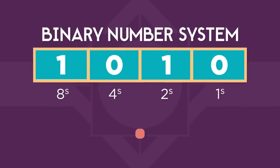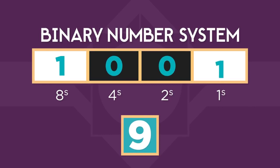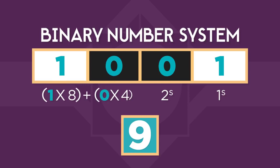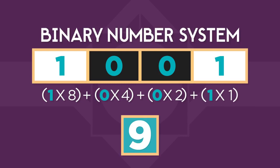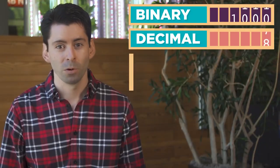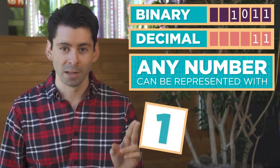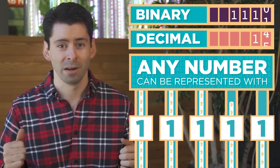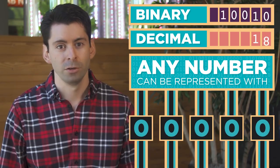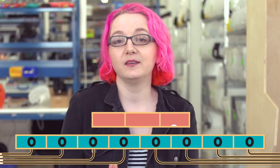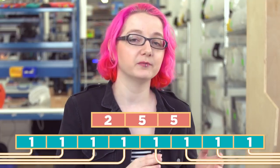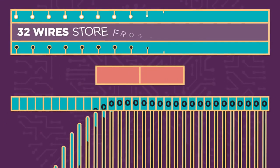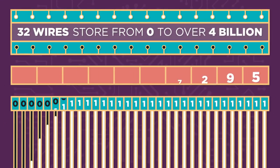For example, the number nine in binary is one, zero, zero, one. To calculate the value, we add one times eight, plus zero times four, plus zero times two, plus one times one. Almost nobody does this math because computers do it for us. What's important is that any number can be represented with only ones and zeros, or by a bunch of wires that are on or off. The more wires you use, the larger the numbers you can store. With eight wires, you can store numbers between zero and two hundred and fifty-five. With just thirty-two wires, you can store all the way from zero to over four billion.